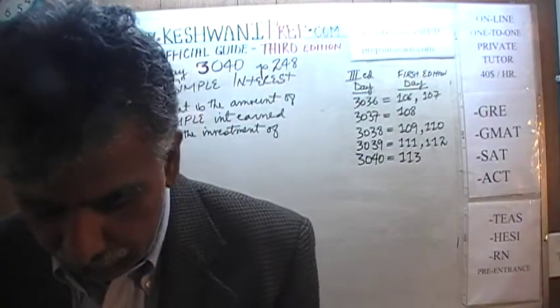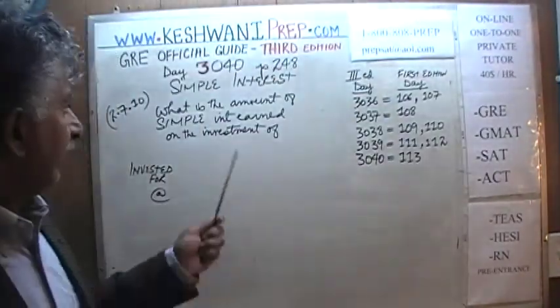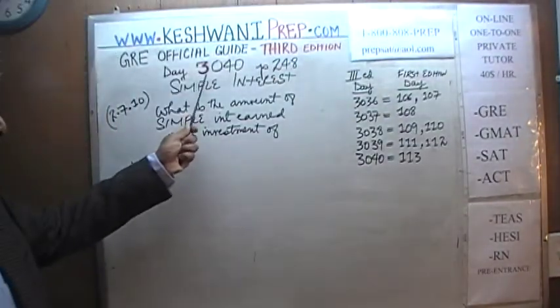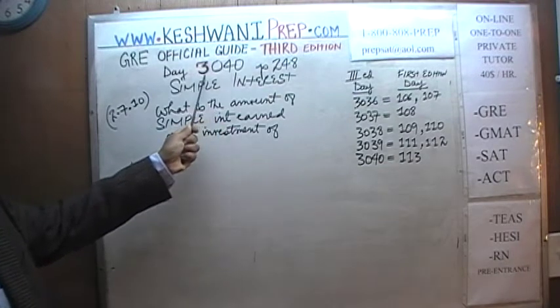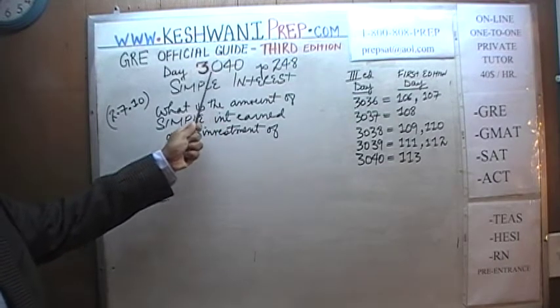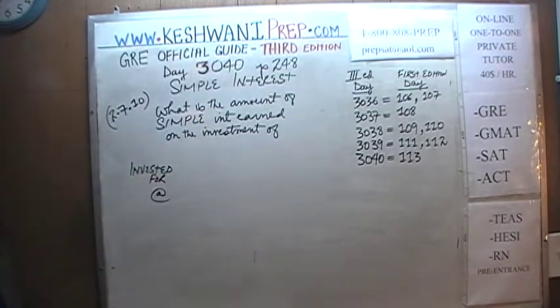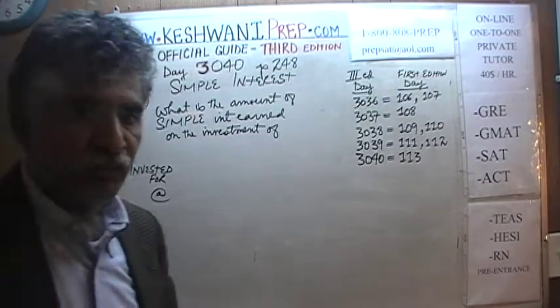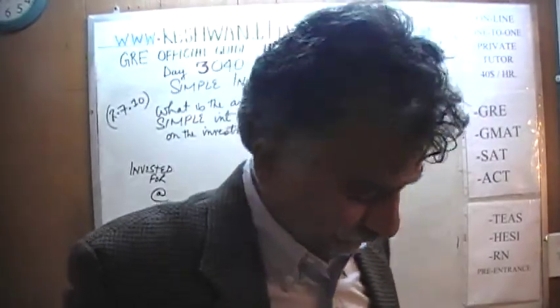Today is our lesson number 40, Day 3040 — the 3 represents that we are in the third edition, and 40 is the day. We are going to cover a topic, a straightforward and very simple topic: simple interest.